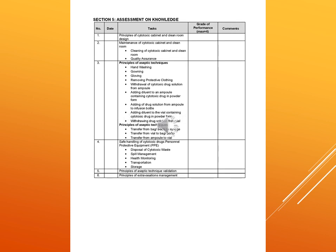Section 5 covers assessment on knowledge. Tasks include principles of cytotoxic cabinet and clean room design, maintenance of cytotoxic cabinet and clean room including cleaning and quality assurance, principles of aseptic techniques including hand washing, gowning, gloving, transfer from bag or bottle to syringe, transfer from vial to bag or bottle, and transfer from ampoule to vial. Also included are safe handling of cytotoxic drugs, PPE, disposal of cytotoxic waste, spill management, health monitoring, transportation and storage, principles of aseptic technique validation, and principles of extravasation management. Grade of performance and preceptor comments are also recorded.